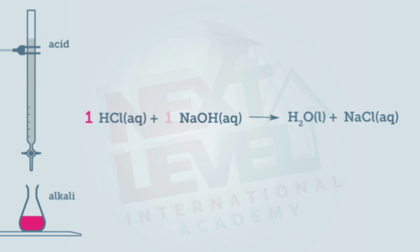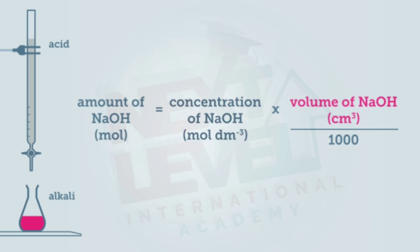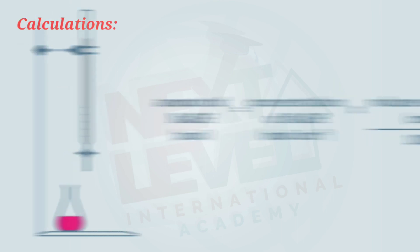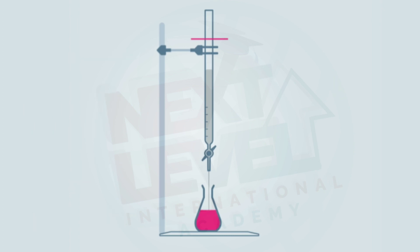In the balanced chemical reaction, we have one mole of HCl and one mole of sodium hydroxide. The concentration of sodium hydroxide is already given, and the volume of sodium hydroxide in the titration flask is also given, so we can find the moles of sodium hydroxide. To find the concentration of acid, we need the moles and volume of acid. The volume of acid can be found from the burette readings — the initial and final — but it must be in cubic centimeters.